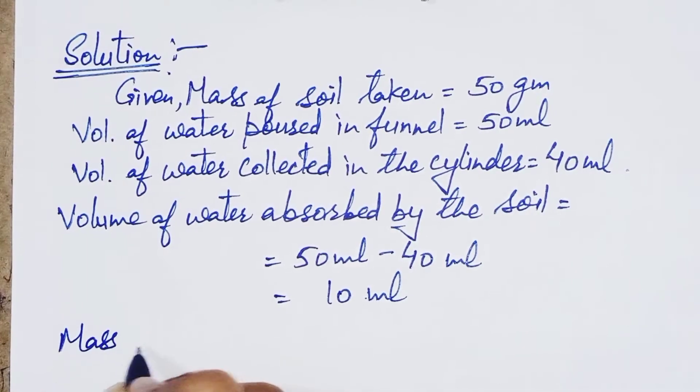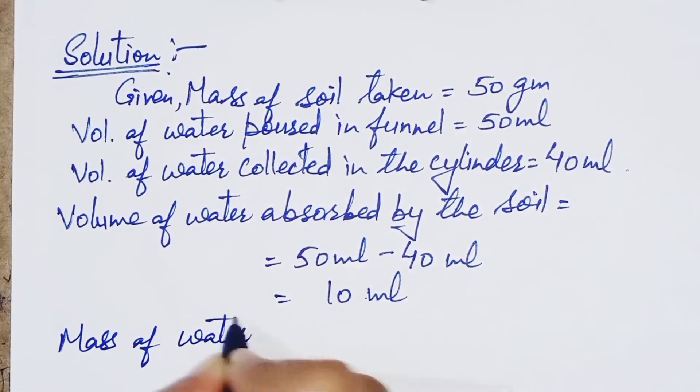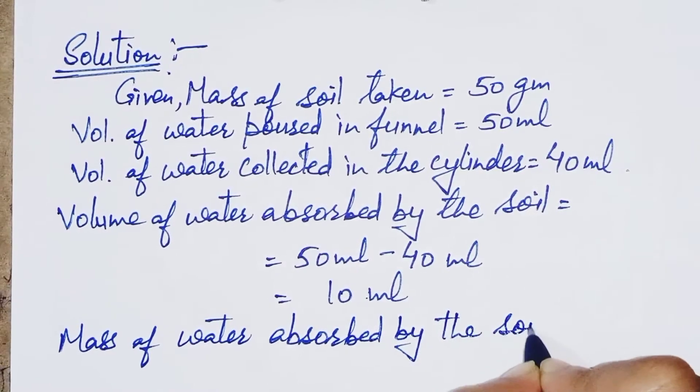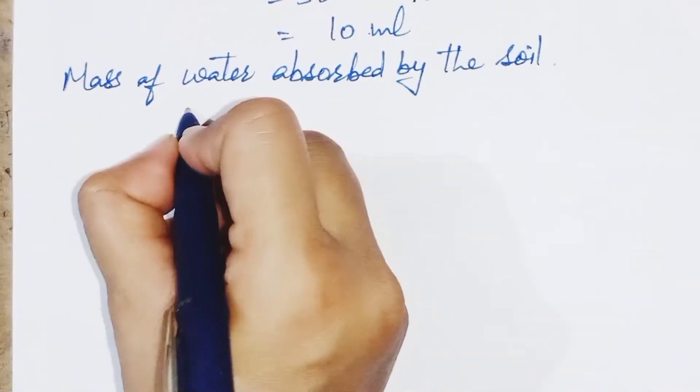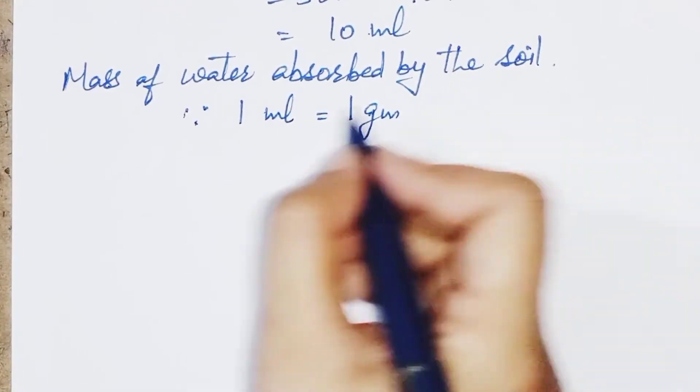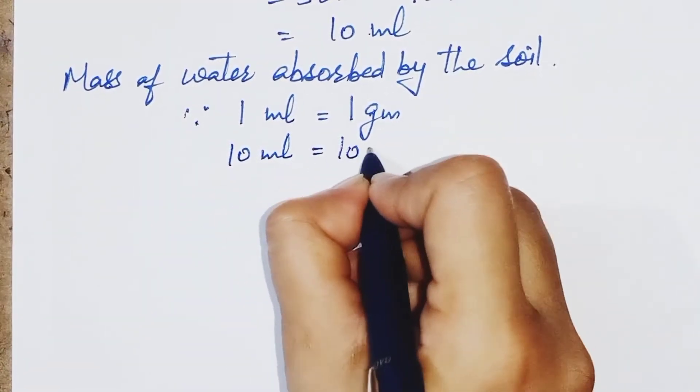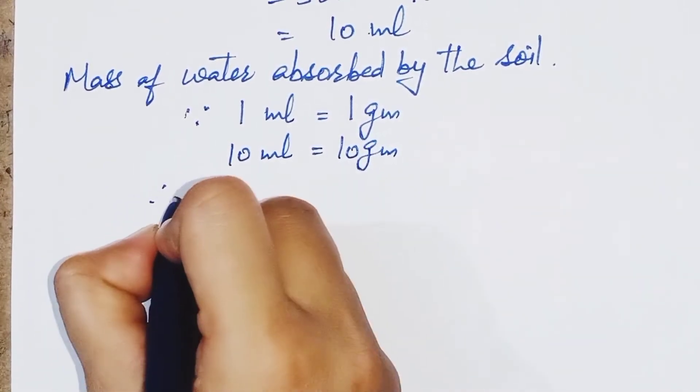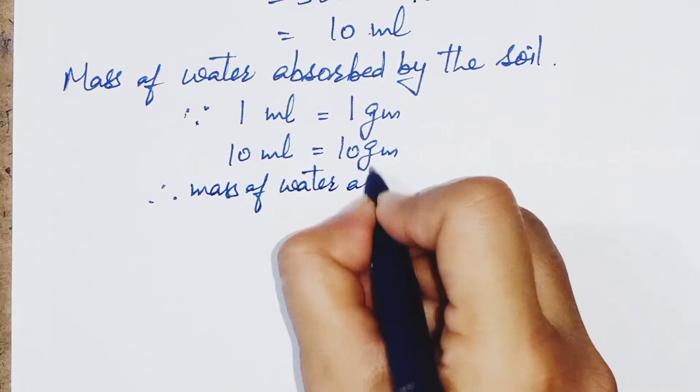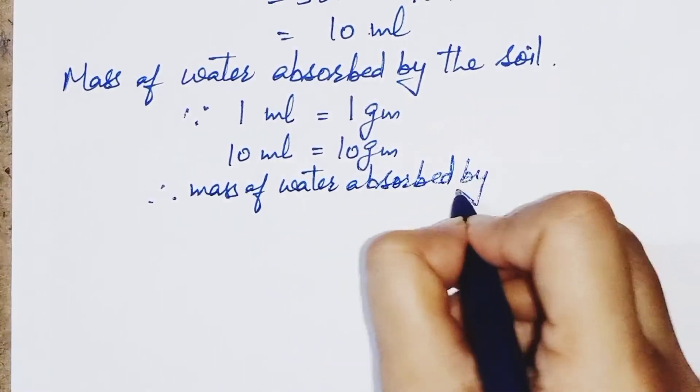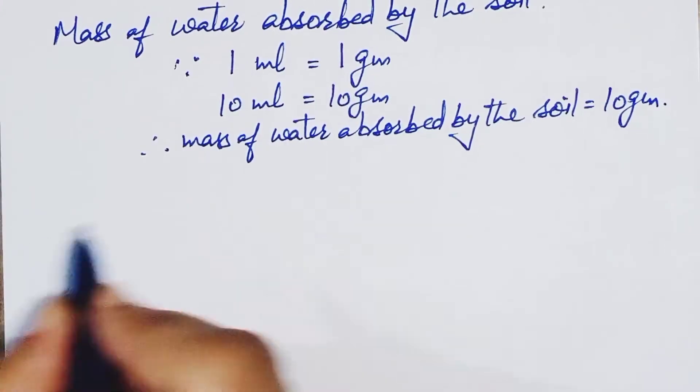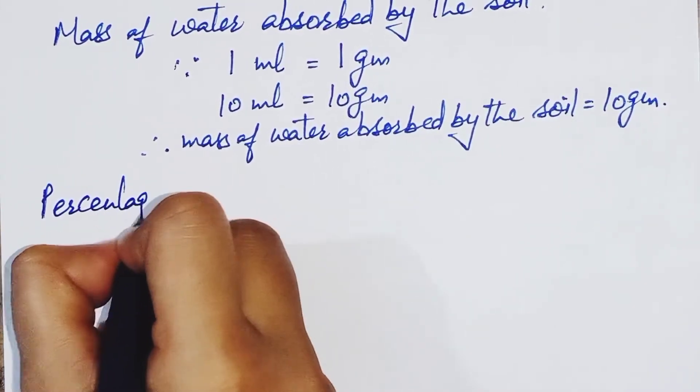Now mass of water absorbed by the soil. As we know 1 ml is equal to 1 gram, so 10 ml is equal to 10 gram. Therefore mass of water absorbed by the soil is equal to 10 gram.